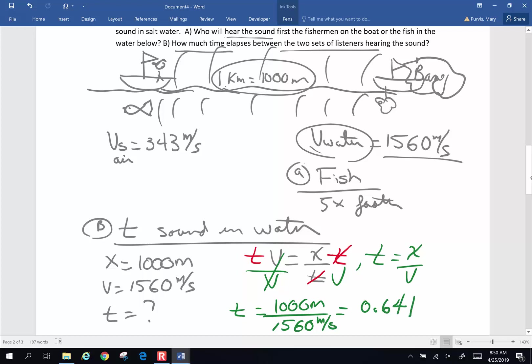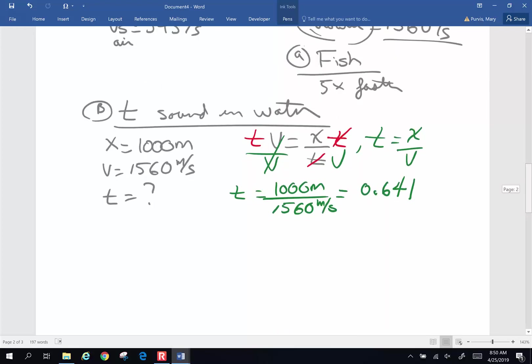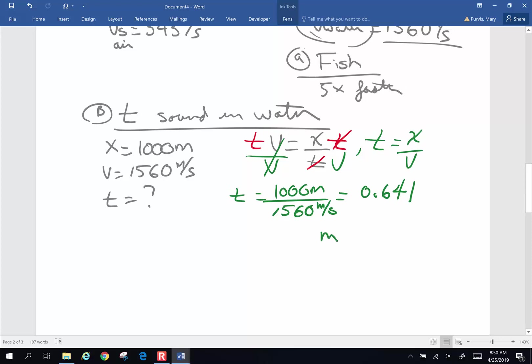What units should be on that? I have meters divided by meters per second. Invert and multiply seconds over meters. These are going to cancel. I'll end up with seconds. So this is time in water.